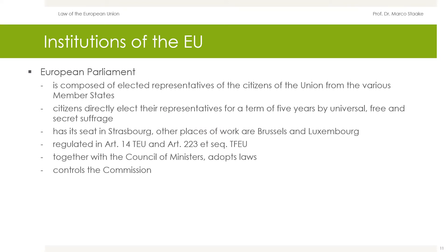Citizens directly elect their representatives to the European Parliament for a term of five years by universal, free, and secret suffrage. The European Parliament has its seat in Strasbourg; other places of work are Brussels and Luxembourg. It is regulated in Article 14 TEU; details are standardized in Articles 223 following TFEU. Together with the Council of Ministers, the Parliament adopts laws that are valid in all member states of the European Union and that affect our daily lives. Furthermore, the European Parliament controls the Commission and is composed of elected representatives of citizens of the Union from the various member states.